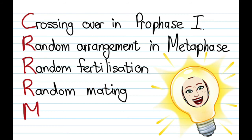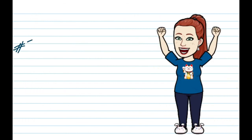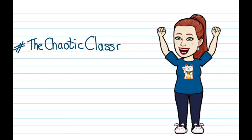And then the last one is probably the easiest — one single word: mutations. So to recap, it's C, three R's, and an M. I hope this helps. Thank you for visiting the chaotic classroom.